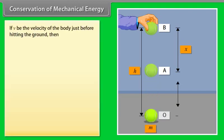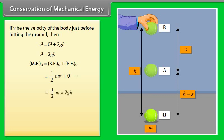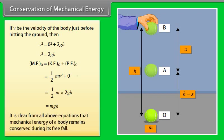If V be the velocity of the body just before hitting the ground, then V square equals 2gh. Here mechanical energy of the body at O is equal to kinetic energy of the body at O plus potential energy of the body at O. By calculating it, we get mechanical energy of a body at O is mgh. It is clear from all above equations that mechanical energy of a body remains conserved during its free fall.